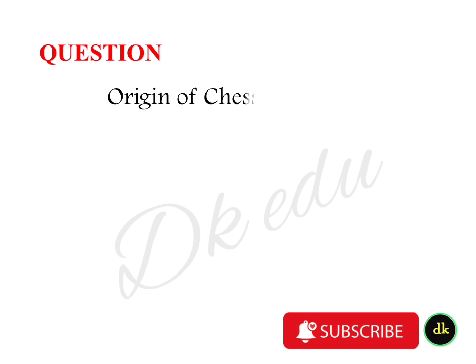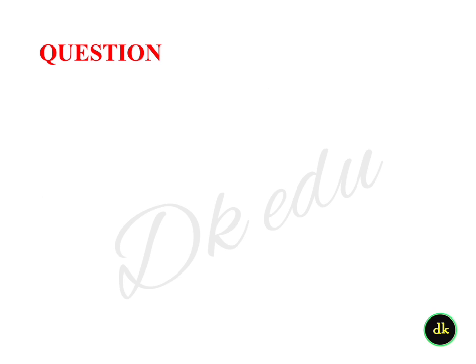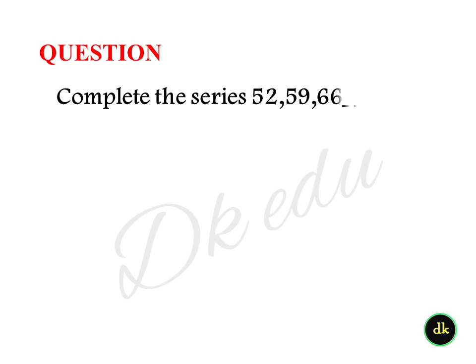The origin of chess is? Answer: India. Complete the series: 52, 59, 66... Answer: 73, 80, and 87.